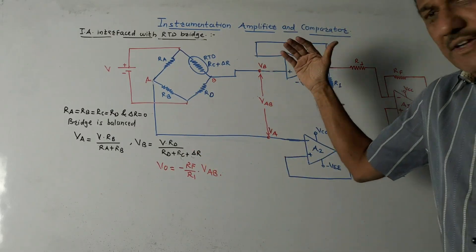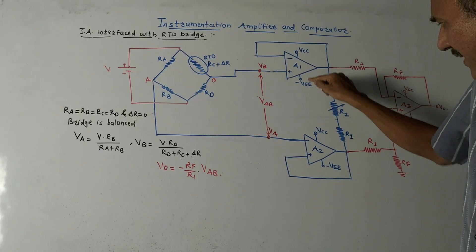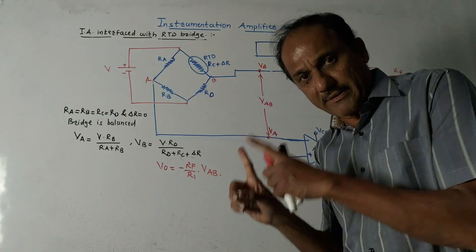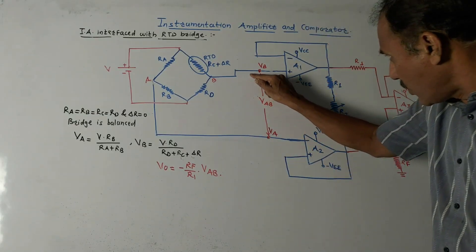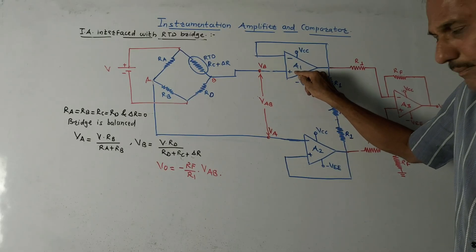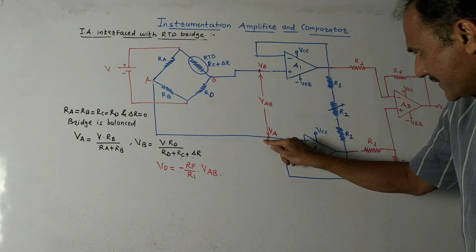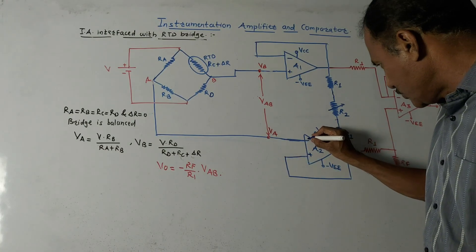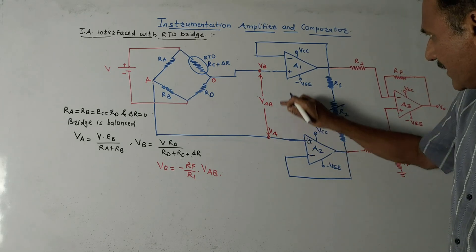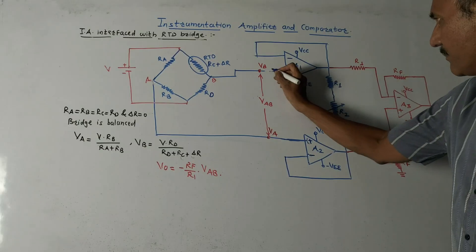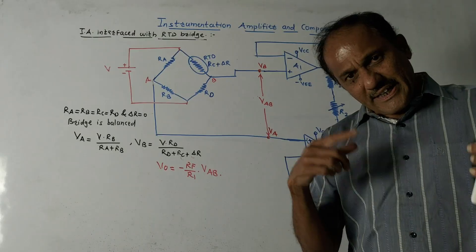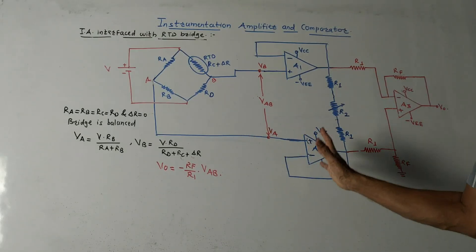The remaining diagram is the same as the three op-amp instrumentation amplifier, with connections drawn differently. A1 and A2 in this case are called unity gain buffers — they are non-inverting amplifiers. VB is connected to the positive terminal of A1, and VA is connected to the positive terminal of A2. So both A1 and A2 are unity gain non-inverting amplifiers, just like in the previous diagram.